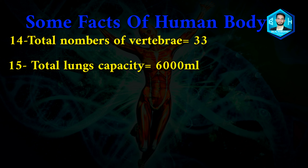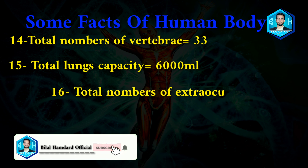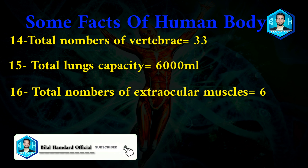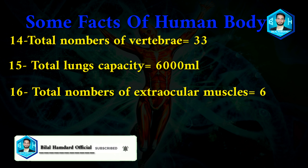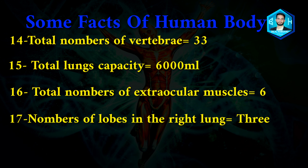Number fifteen: total lung capacity is approximately 6,000 ml. In the human body, the vital capacity is about 2,500 ml. Number sixteen: number of extraocular muscles is 6.